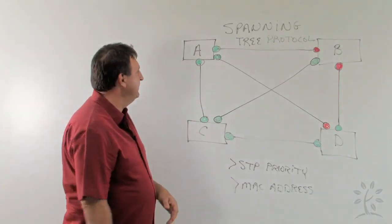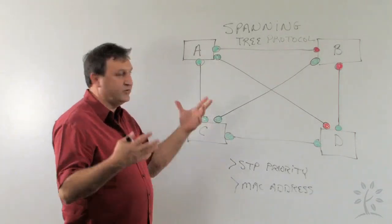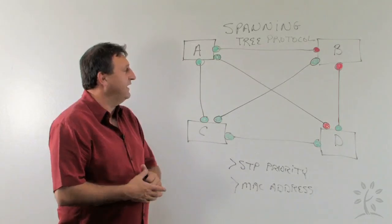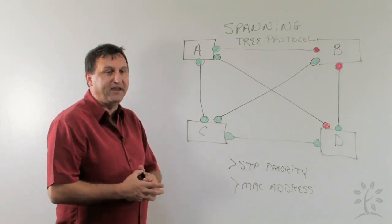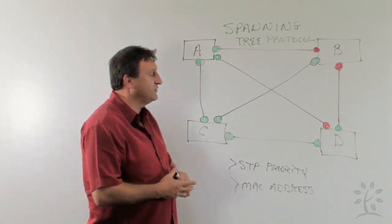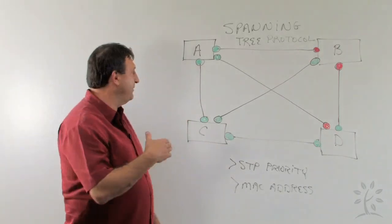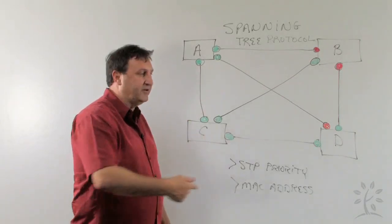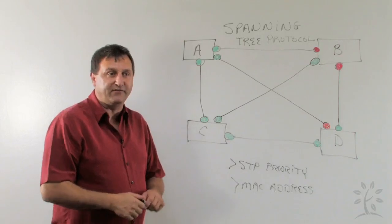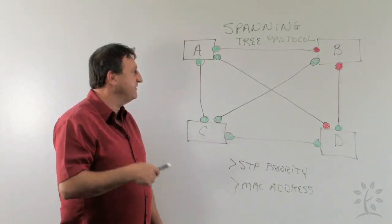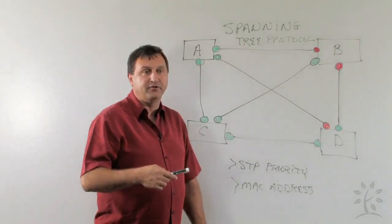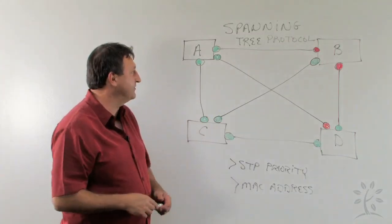First of all, what Spanning Tree does is it allows us to connect switches in an environment and prevent that environment from having what we call switching loops. Switching loops are when packets are entered into a loop and there's more than one way to get from one path to another and they endlessly circle within that loop. So we have to eliminate that process within our switch environments.